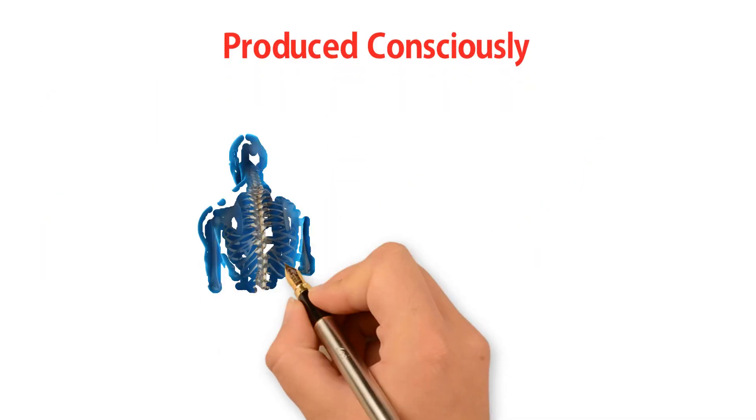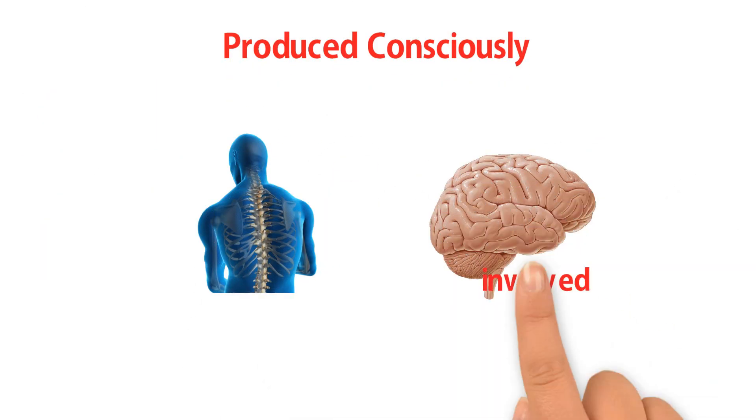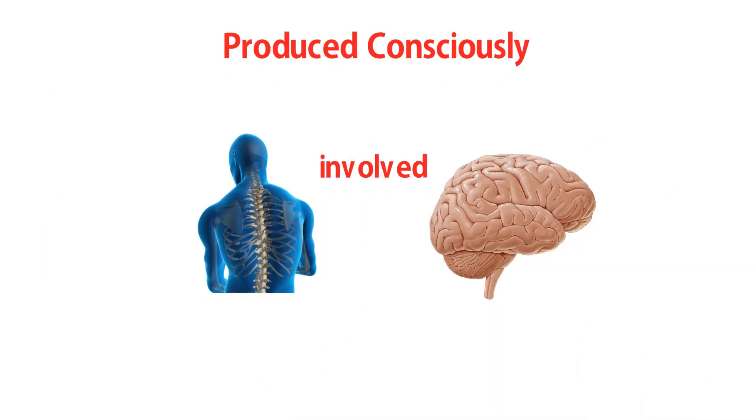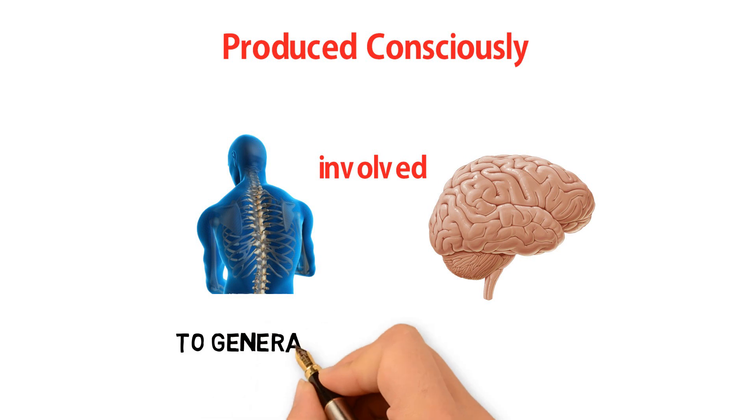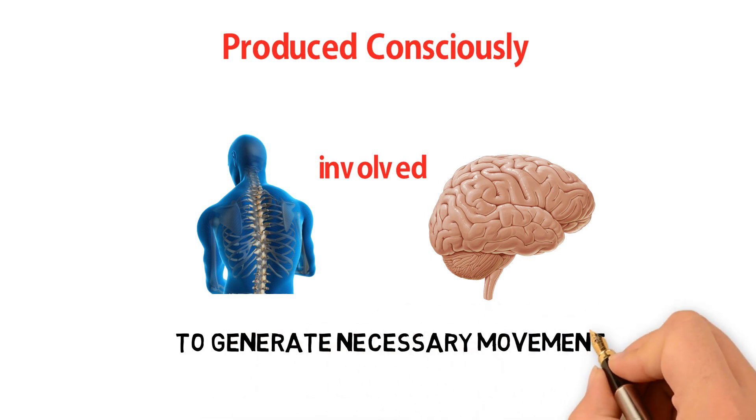Both the spinal cord and brain are involved in voluntary action, and these coordinate with the PNS to generate the necessary movements.